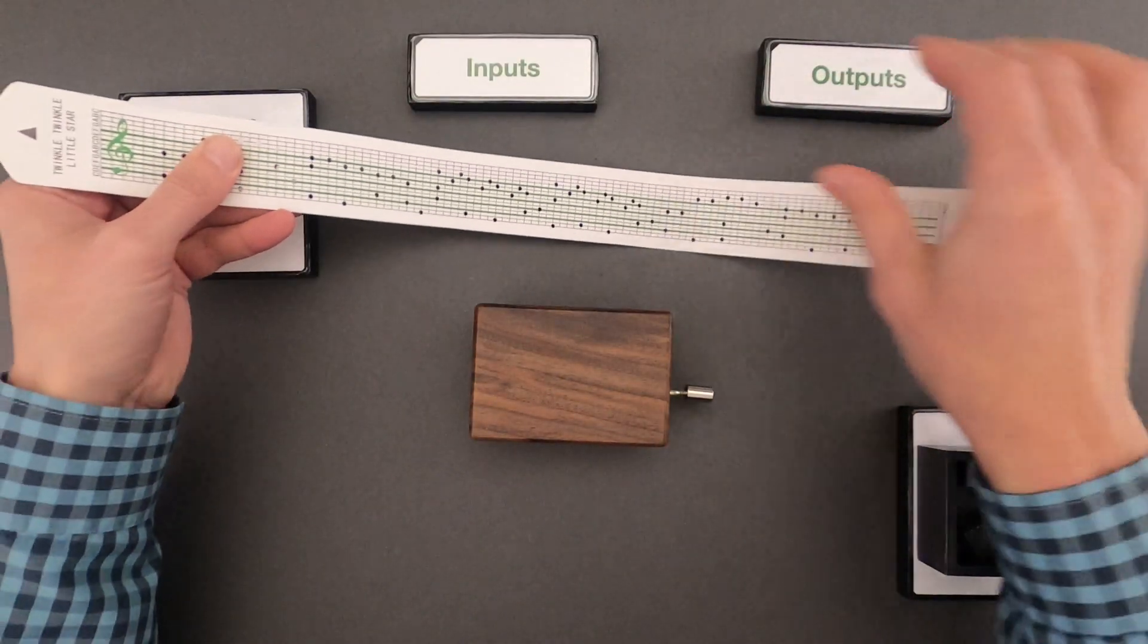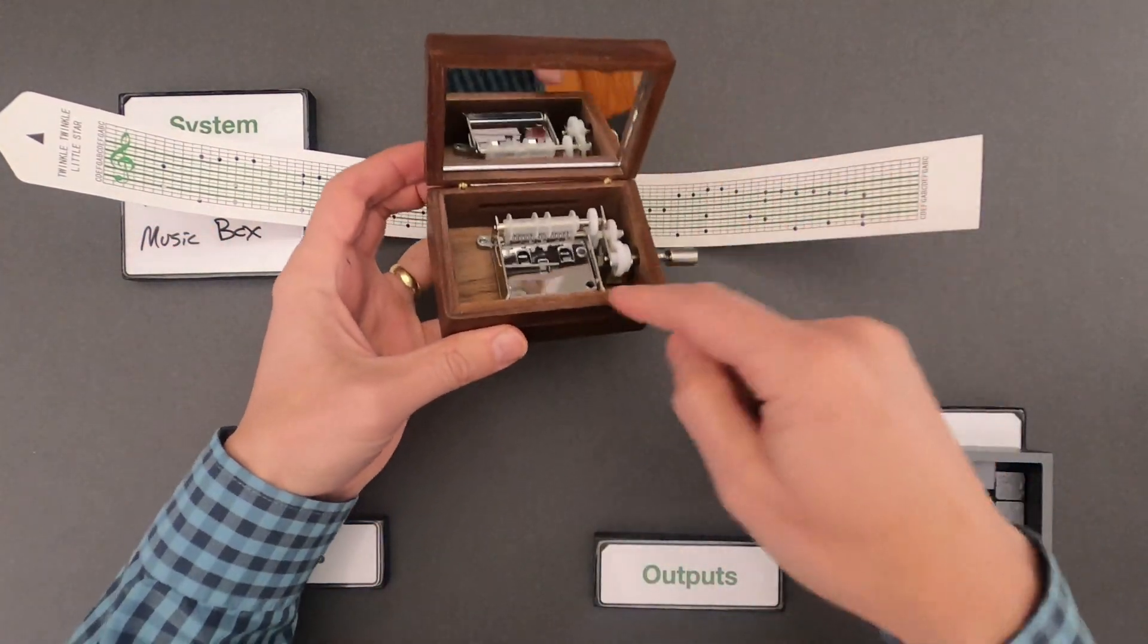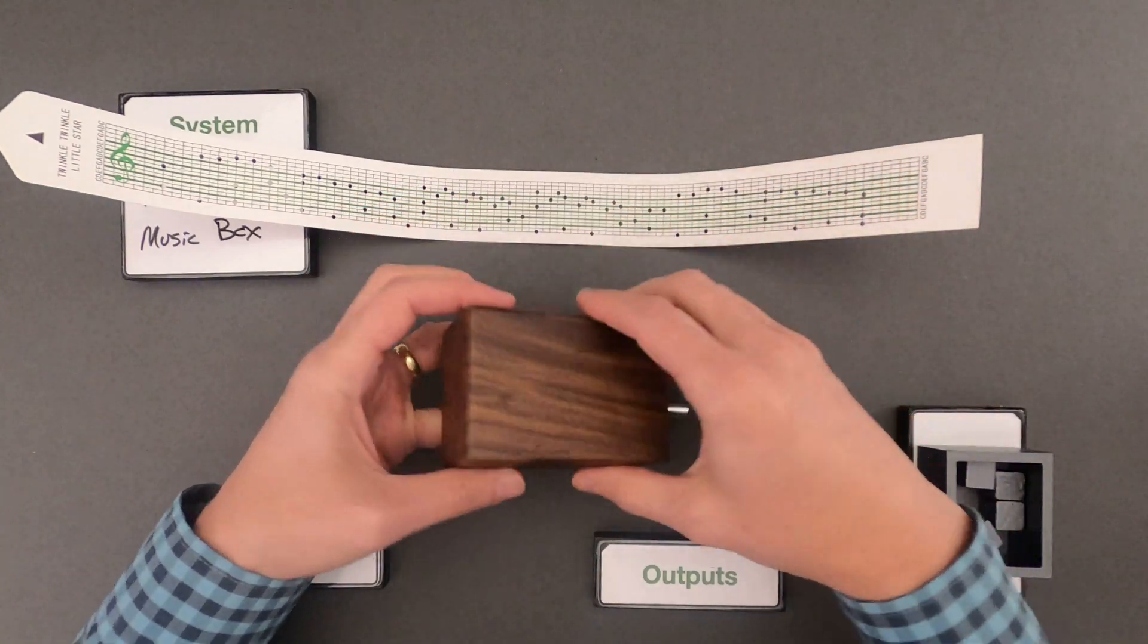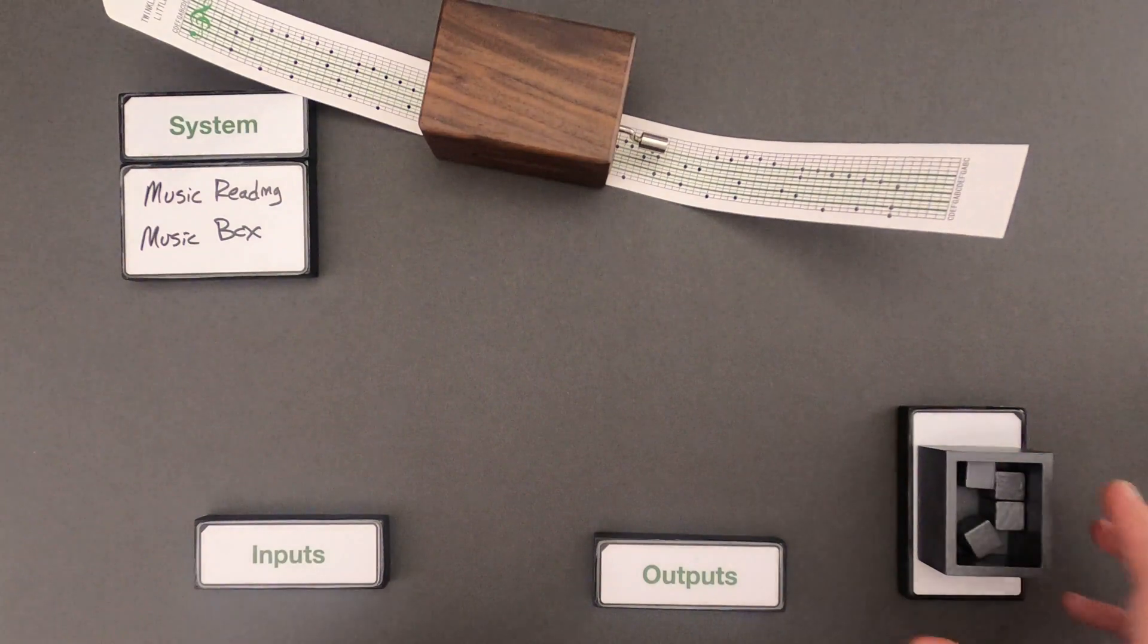All right so the paper is a part of the system. Also on the inside of it you can see there's some gears and there's a comb that's reading the music as it goes through. So that's going to be the system that we're going to dig into.